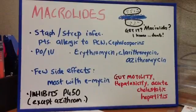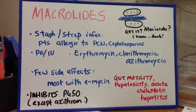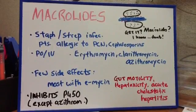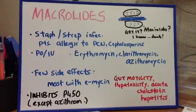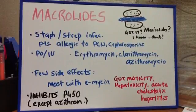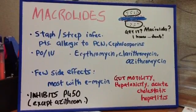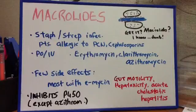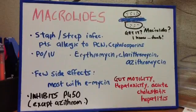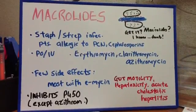On to the macrolides. These may be used for strep or staph infections in patients who are allergic to penicillin and cephalosporins. For erythromycin, clarithromycin, azithromycin — these are examples of macrolides. There are a few side effects, and the majority of these are with erythromycin.